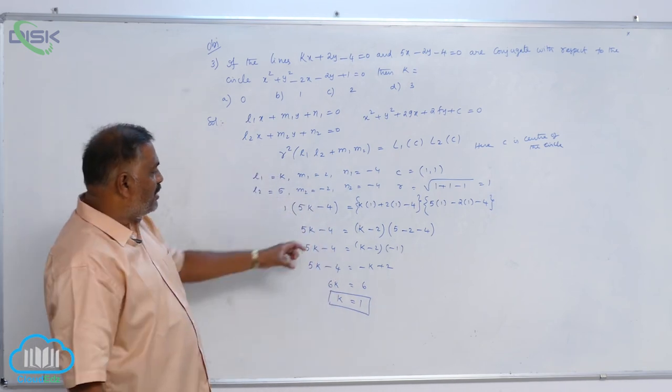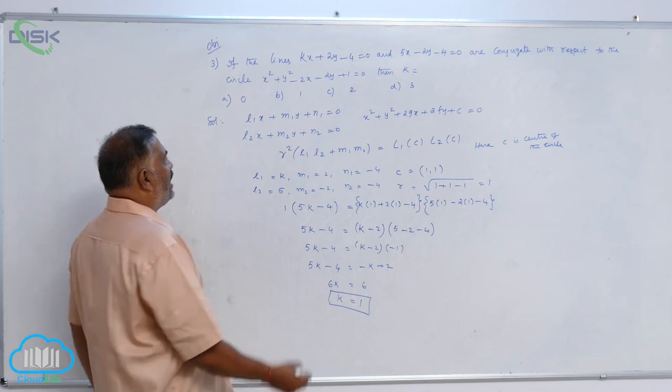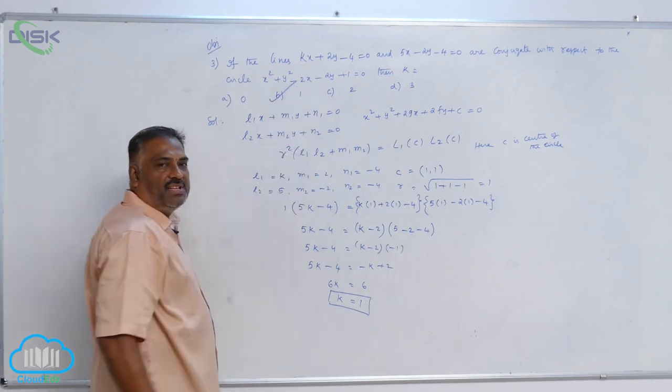This is how by the simple method we can find out the unknown value of k. Of course, B option is correct.